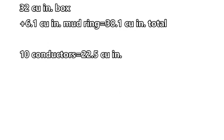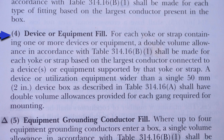So we now have 22.5 cubic inches accounted for with the 10 conductors. So far we have a 32 cubic inch box and a 6.1 cubic inch mud ring for 38.1 cubic inches total, and we have 10 conductors which equals 22.5 cubic inches. We're doing real well so far. Now let's find out how much we have to allow for the switch and the receptacle.